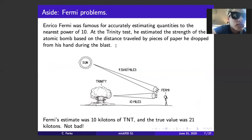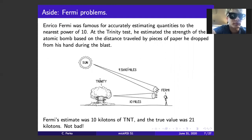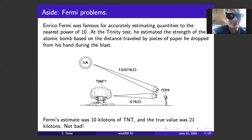That little game we just played is associated with Enrico Fermi, for whom the institute where I work is named — the Enrico Fermi Institute. That little game of estimating the radius of the electron or the size of a galaxy is called a Fermi problem, or order of magnitude estimate. Fermi was famous for this. The most famous instance was when he was viewing the Trinity nuclear bomb test and wanted to estimate the amount of energy released to within an order of magnitude. By dropping some pieces of paper and feeling the warmth of the explosion, he came up with an estimate of 10 kilotons, which was within a factor of two of the true value.